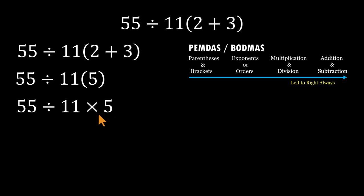And this is where people go off track. They see a number pressed up against the parentheses and instinctively think, oh, multiplication must go first. But it doesn't work like that. Multiplication isn't stronger than division. They're equals.